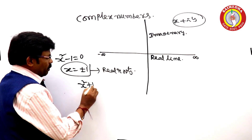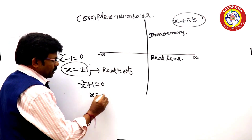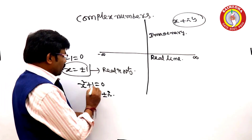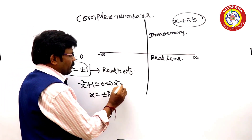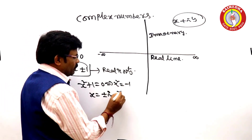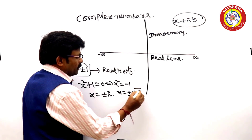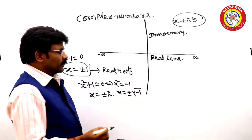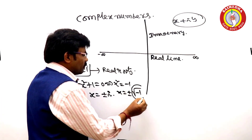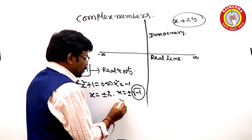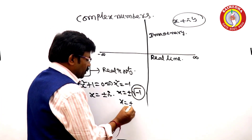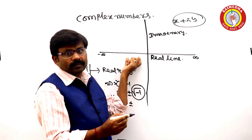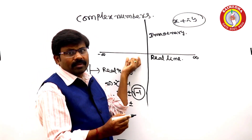x squared plus 1 is equal to 0. x squared is equal to minus 1. x is equal to plus or minus the square root of minus 1. This does not belong to real numbers.